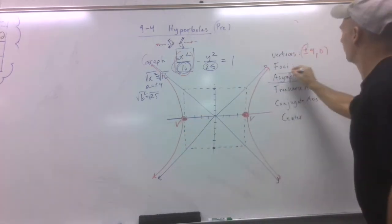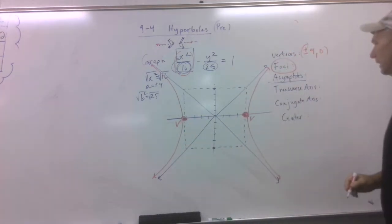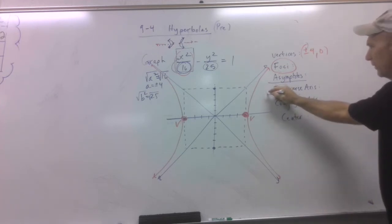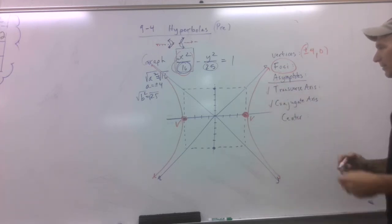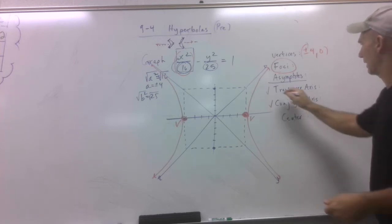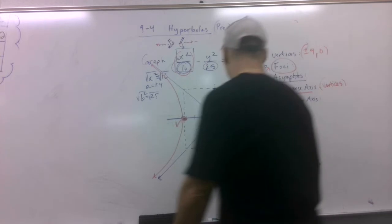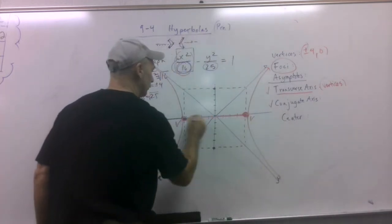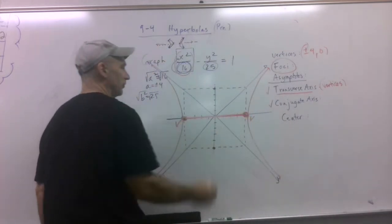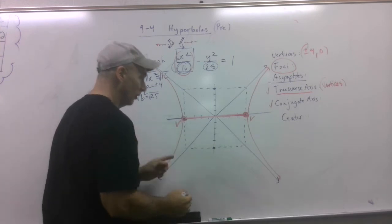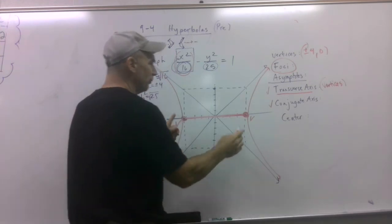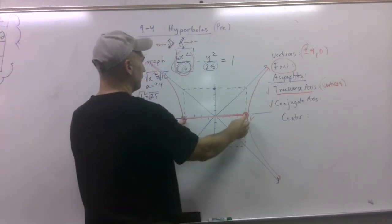Now where are the foci? We'll talk about that in a minute. Let's talk first about the transverse axis and the conjugate axis. Now the transverse axis is the axis where the vertices are. Well, in that case, that would be this one right here. That's the transverse axis.